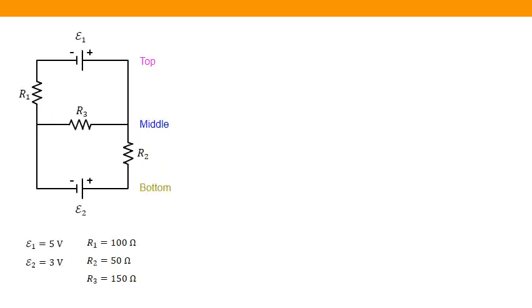We're going to use the same circuit we used in our earlier example. We've got two batteries, one that has a 5V battery and then another that's a 3V battery. Then we're going to have three resistors. Resistor 1, which has 100 ohms resistance, resistor 2, which has a 50 ohm resistance, and then this resistor in the middle, which is 150 ohms resistance.